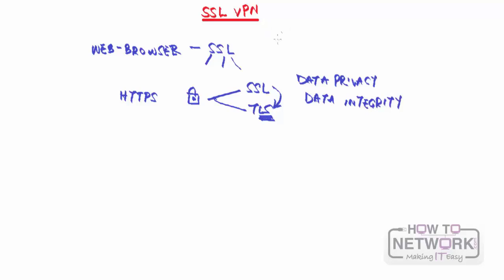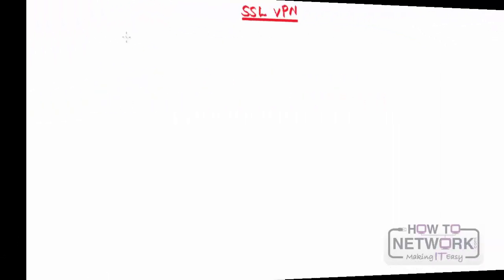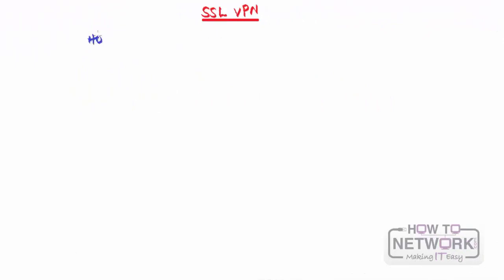With SSL VPN you can take something that is already pre-existing - many web browsers already support SSL - and leverage it to build VPN tunnels. That is what SSL VPN does for you. Before we go on, let's see how SSL works, just to get a feel of how the protocol itself works before we look at how it's used for VPN.